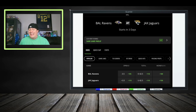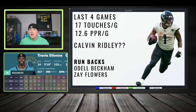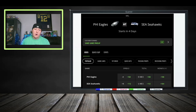Ravens at the Jaguars — 42.5 over/under, could be a fun matchup. Travis Etienne: 17 touches a game, 12.6 PPR points per game. Calvin Ridley — let's see what happens. Odell Beckham: I like him down the stretch, I like his target share and air yards. He should be rostered in all leagues, probably around 75% ownership. Zay Flowers is also getting opportunities. For Ravens backs, Gus Edwards is safer with goal-line work; Keaton Mitchell is a home-run threat who just needs green grass in front of him.